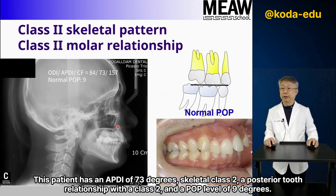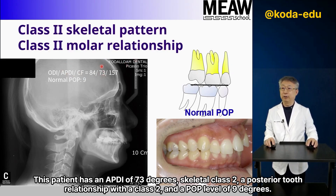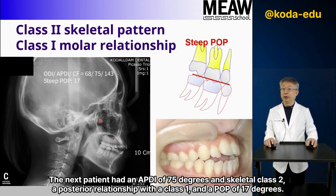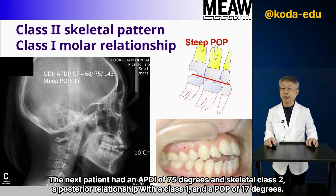This patient has an APDI of 73 degrees, skeletal Class 2, a posterior tooth relationship of Class 2, and a POP of 9 degrees. The next patient had an APDI of 75 degrees, also skeletal Class 2, a posterior relationship of Class 1, and a POP of 17 degrees.